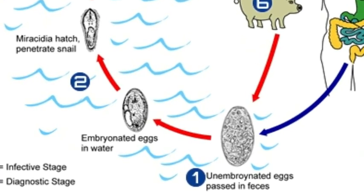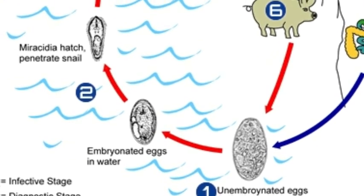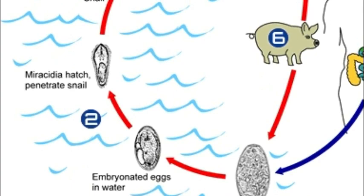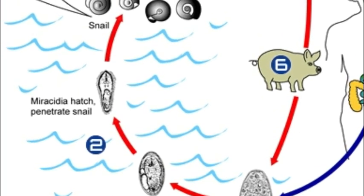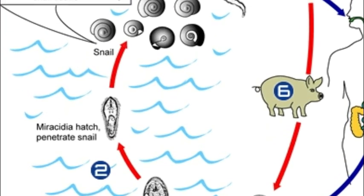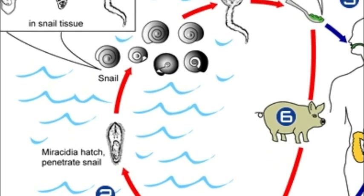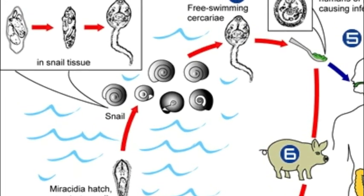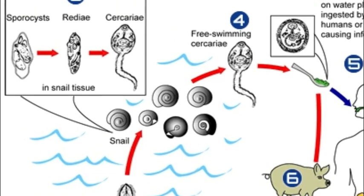Stage 2: Myracidia. Hatches from egg in water, has cilia. Can swim vigorously and must find intermediate snail host in one to two hours or may be too exhausted to invade.